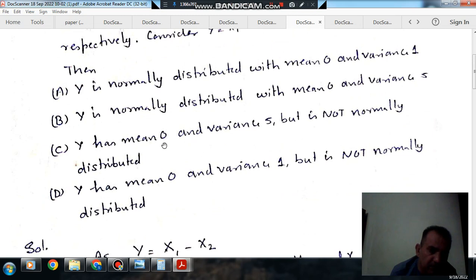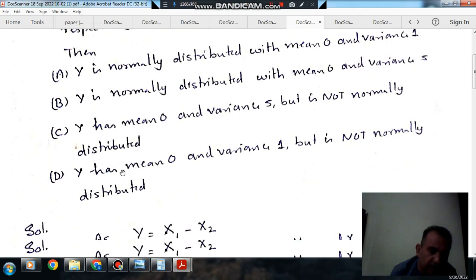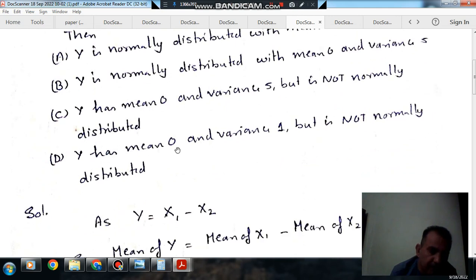Option C: Y has mean 0 and variance 5 but is not normally distributed. Option D: Y has mean 0 and variance 1 but is not normally distributed.